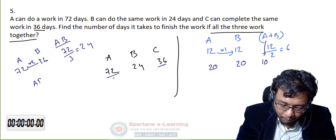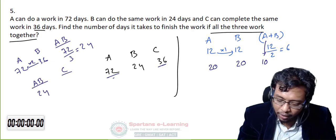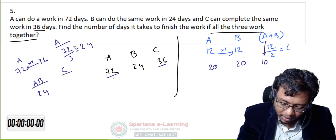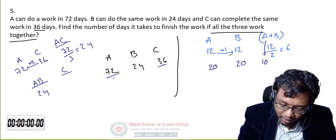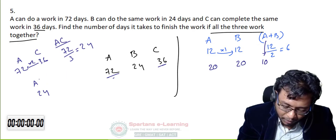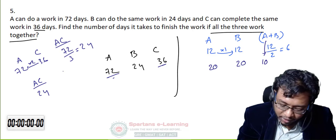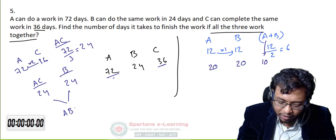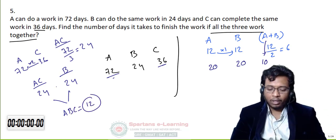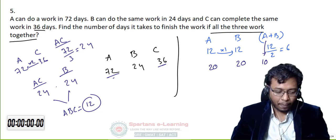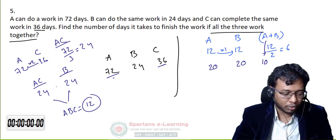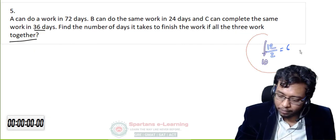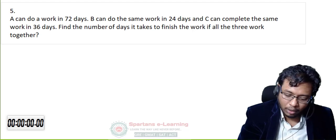A+B (which is actually A+C here) can do the work in 24 days, and B (or C) can do the work in 24 days. Since both take 24 days, combining all three (A+B+C) takes exactly half: 12 days. So the answer is 12 days. You are able to solve this question orally.